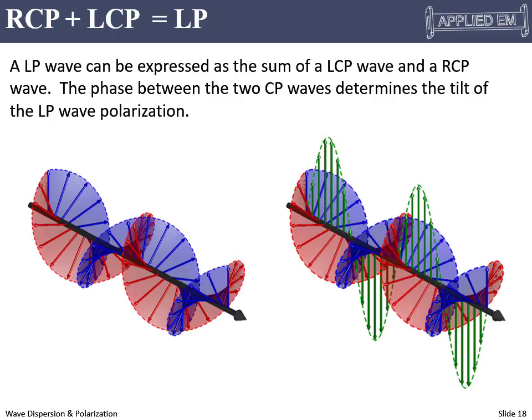Conversely, if we take two circularly polarized waves and add them together, we get a linearly polarized wave. When we added two linears, the phase had to be exactly 90 degrees to get circular. But no matter what, if we add two circularly polarized waves, we get a linear. As those two waves go in and out of phase, all that does to the linear polarization is rotate it. We can control the orientation of the composite linear polarization simply by the phase between the two circularly polarized waves.